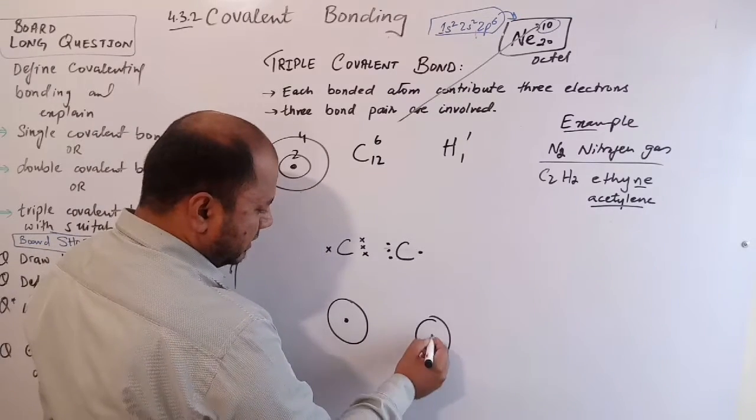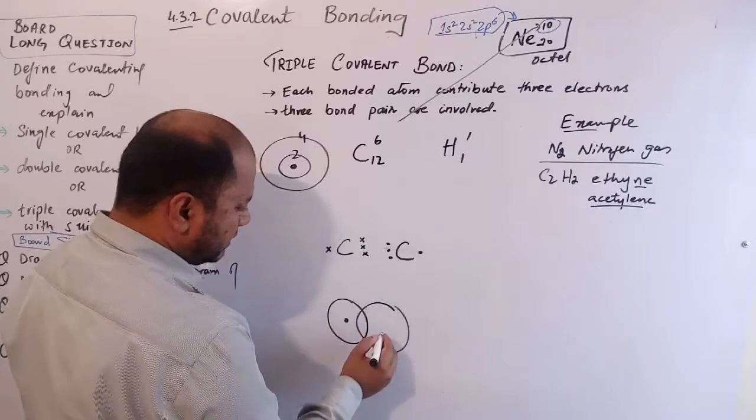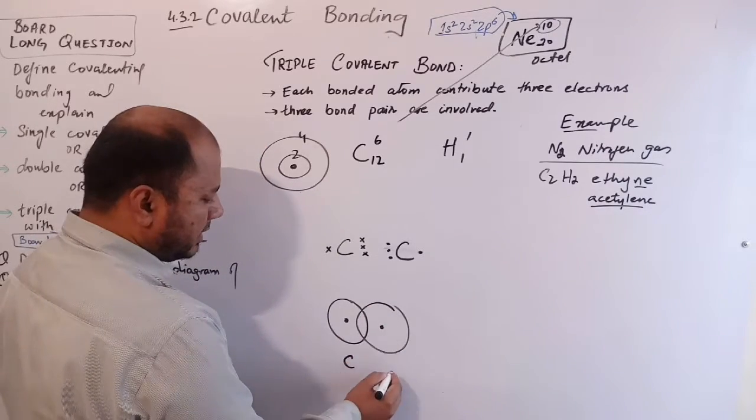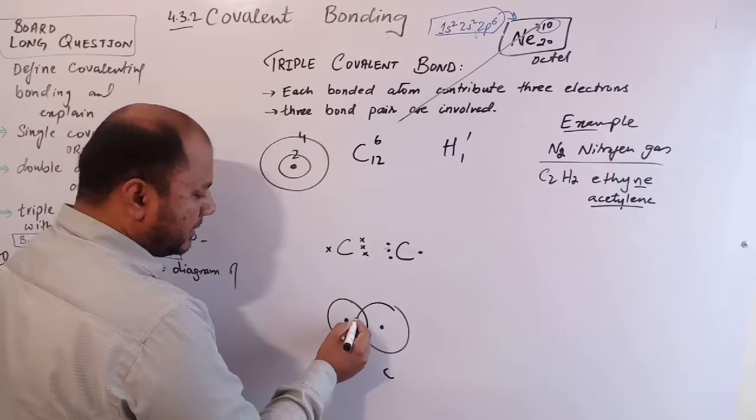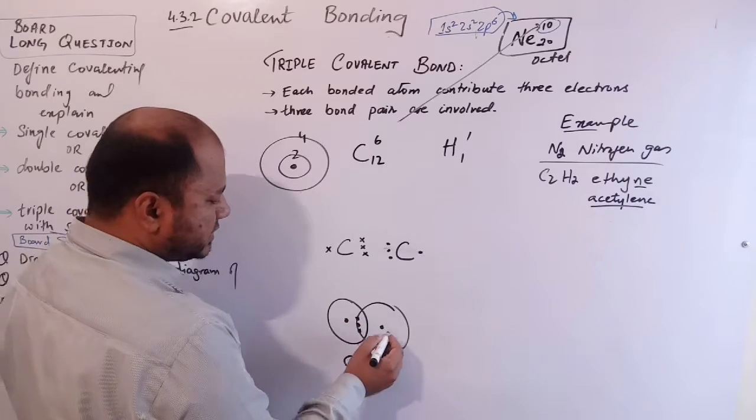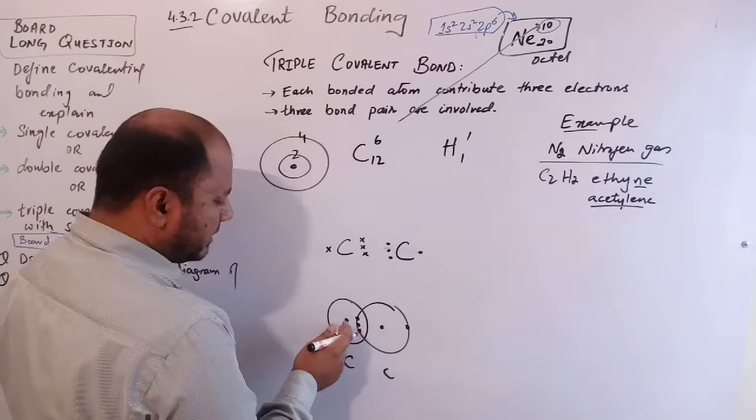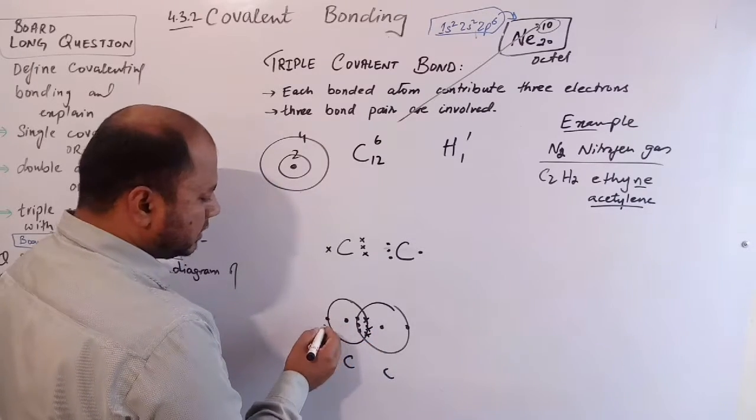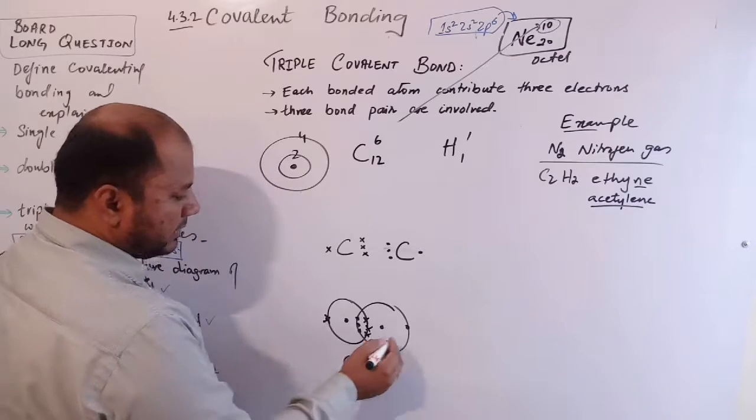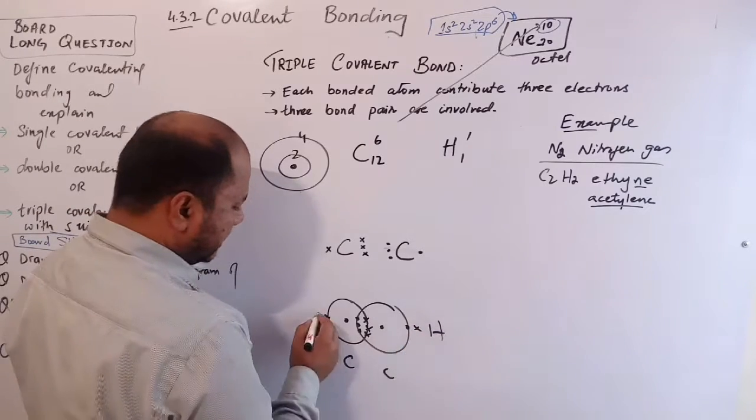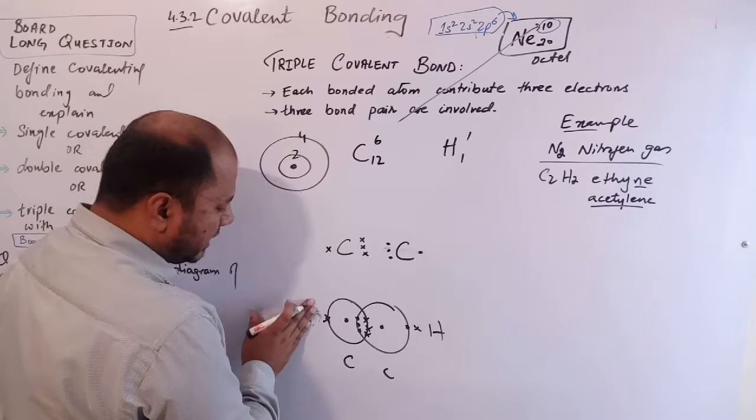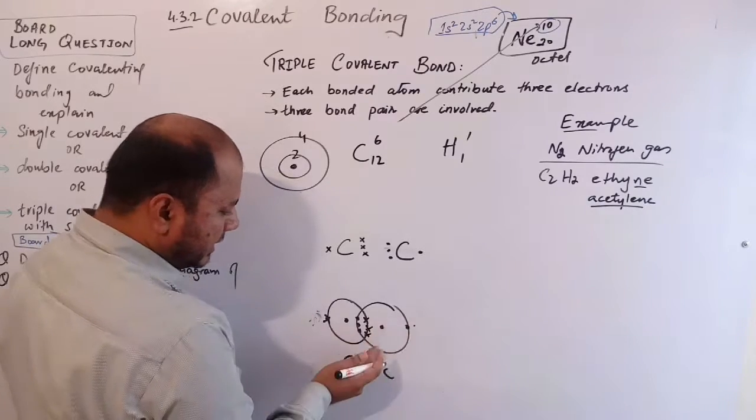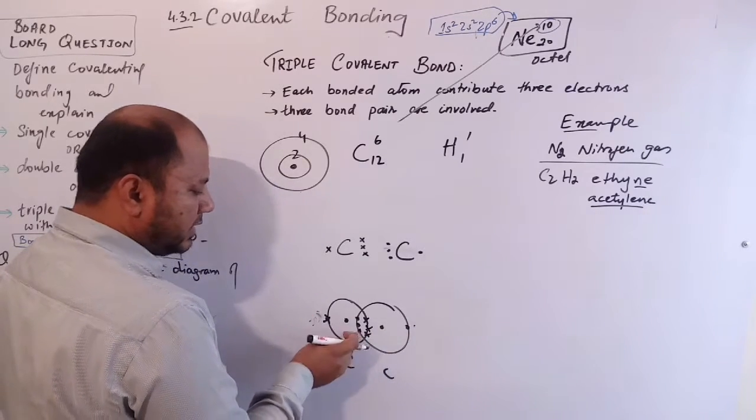This is carbon, and it has total 4 electrons. Here we have 3 shared with the other carbon, and here we have hydrogen and here we have hydrogen.